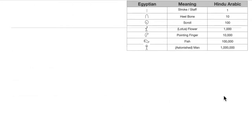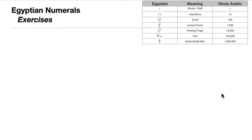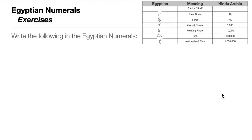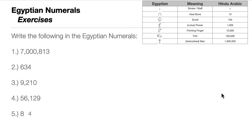Now it's time for exercises. Write the following Hindu-Arabic numerals in Egyptian numerals. There are five numbers — you can pause the video to answer them.